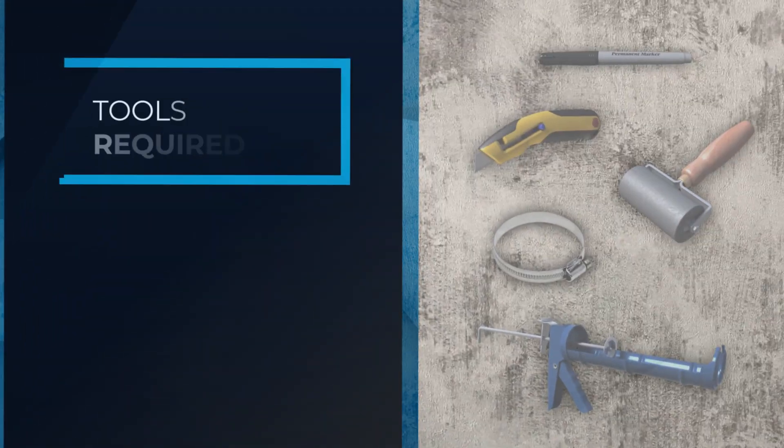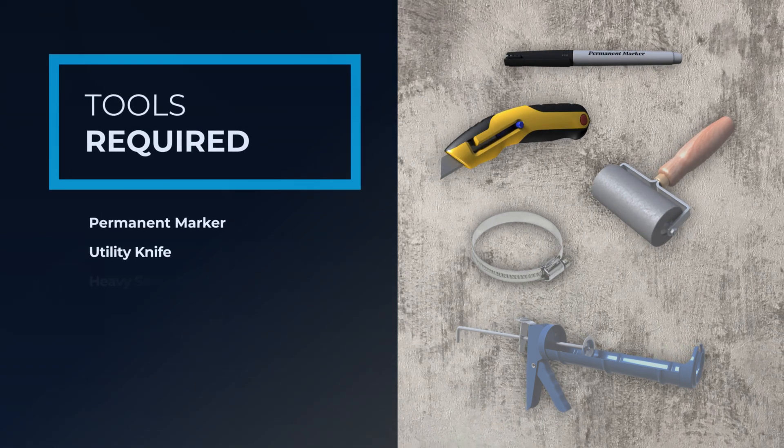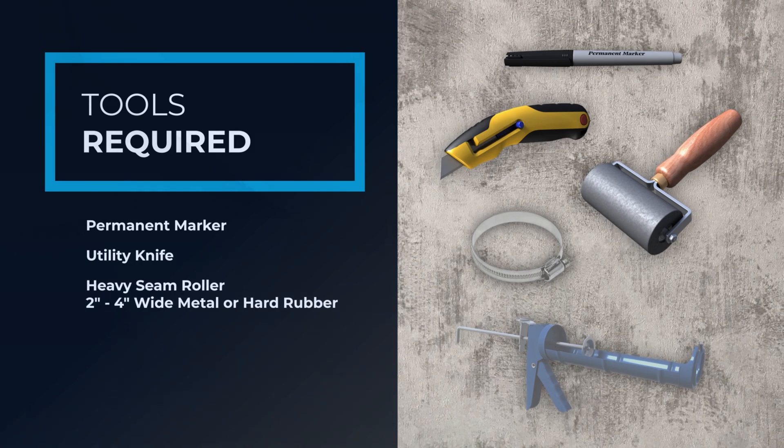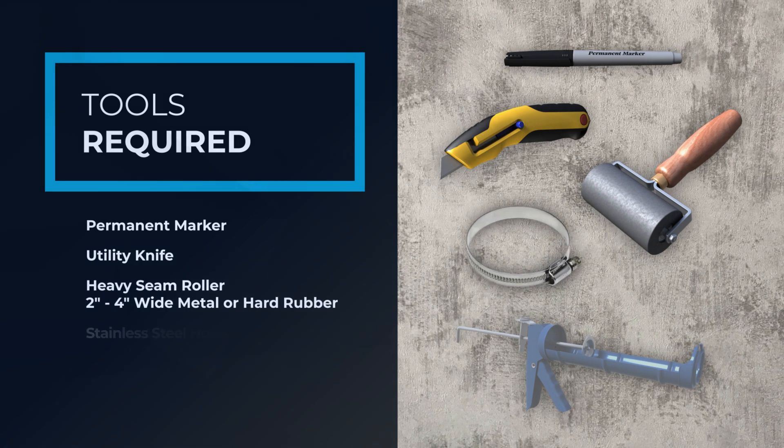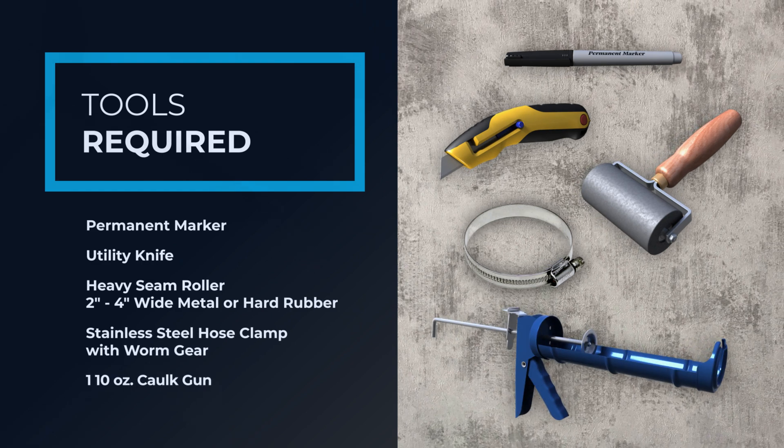You will also need the following tools: one permanent marker, one utility knife, one heavy seam roller that is between 2 and 4 inches wide and made from either metal or hard rubber, one stainless steel hose clamp with a worm gear, and one 10-ounce caulking gun.